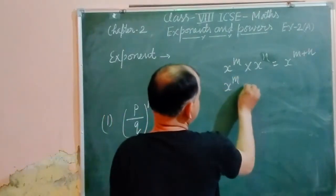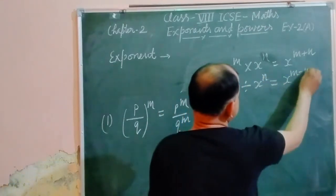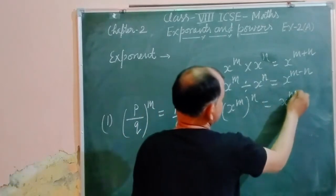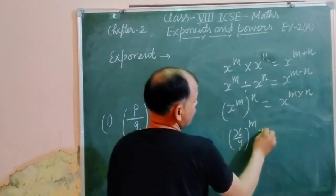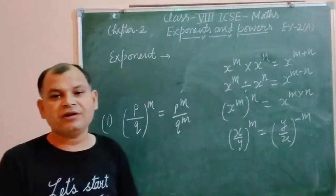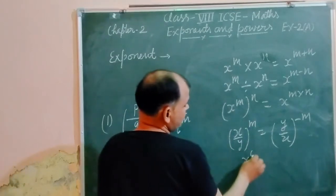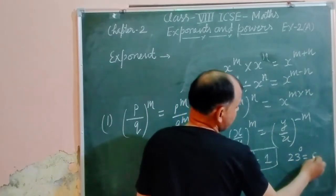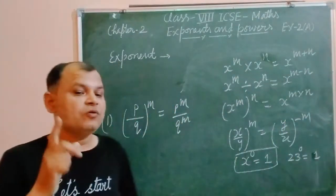If x to the power m divided by x to the power n, we get x to the power m minus n. If x to the power m, whole to the power n, we can write it as x to the power m times n. Also, x over y to the power m equals y over x to the power minus m — if we reverse the number, the power becomes negative. And x to the power 0 is 1; for example, 23 to the power 0 equals 1. If a base has power 0, its value is always 1.